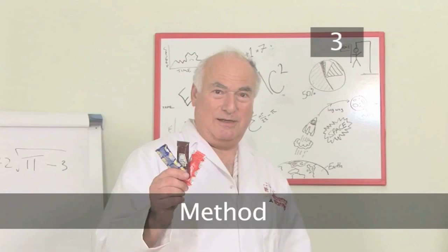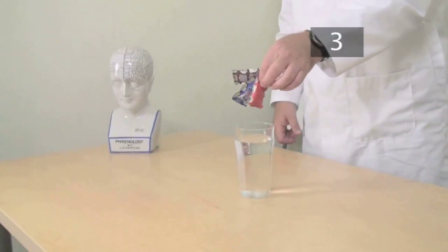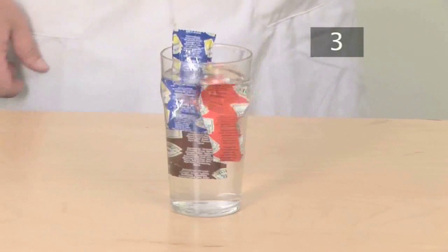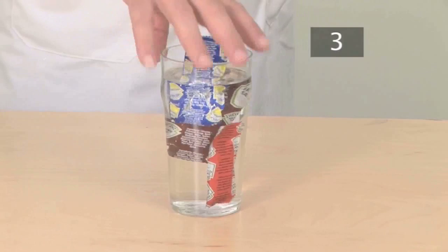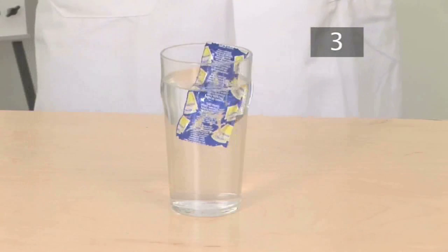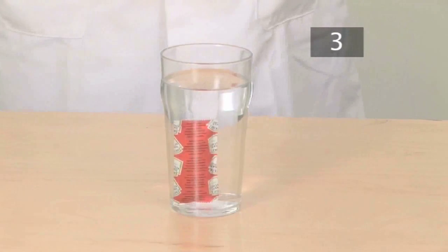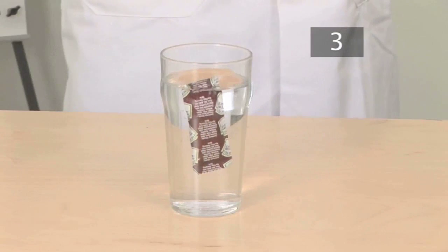Step 3. Method. Drop each sachet into the pint glass full of water. We will use the one that floats between the other two. This one floats too much. This one sinks too deep. But this one is just right.